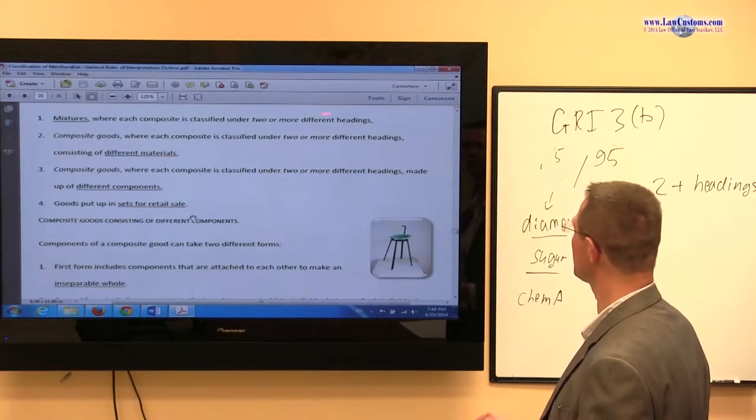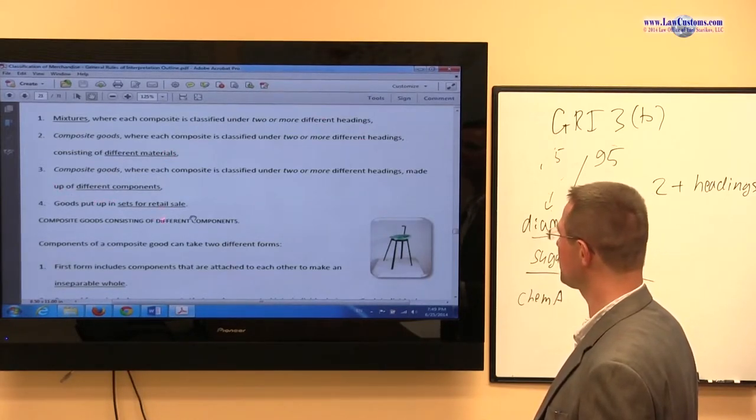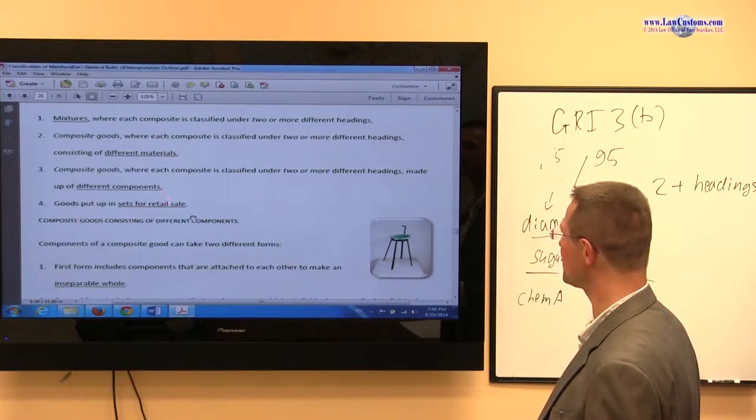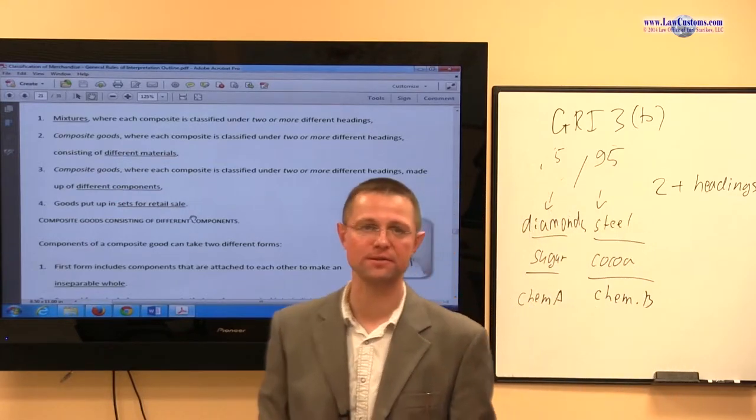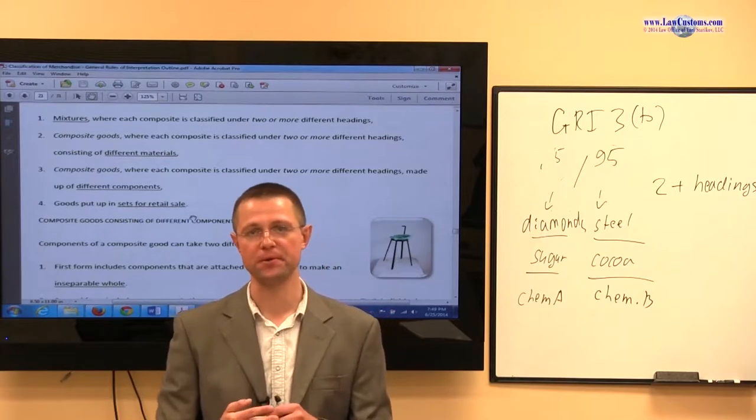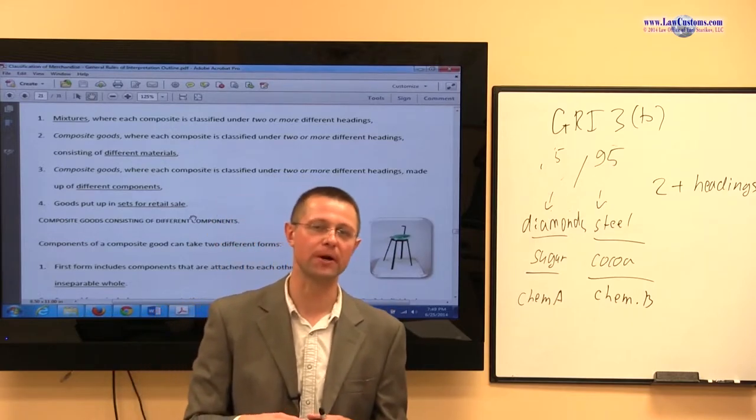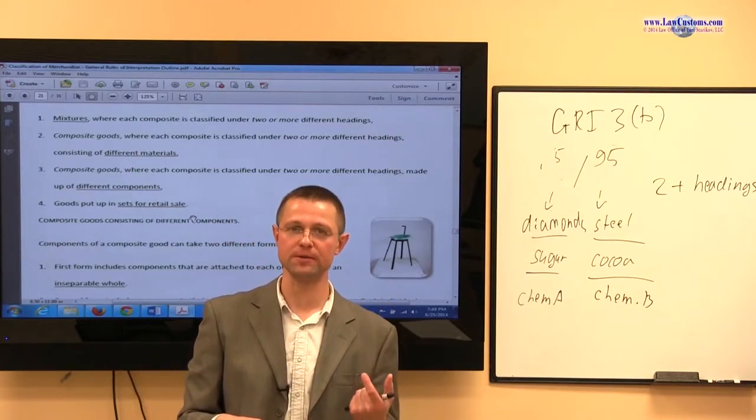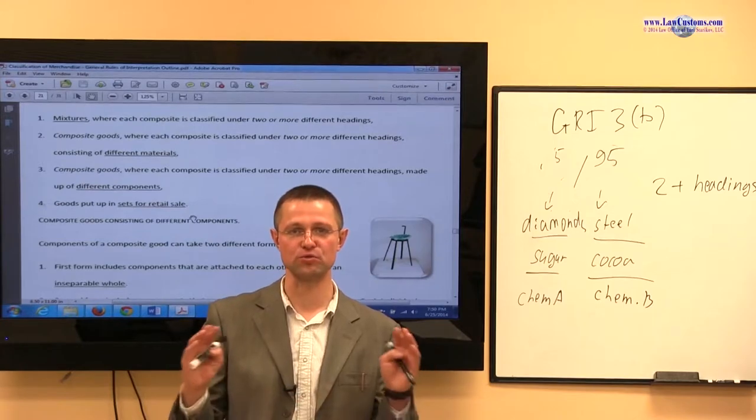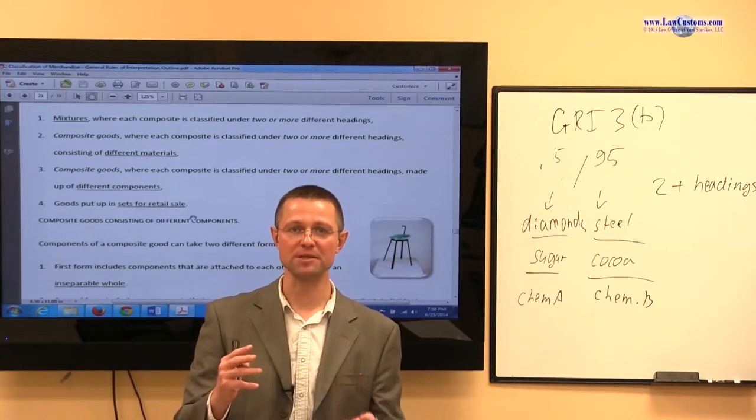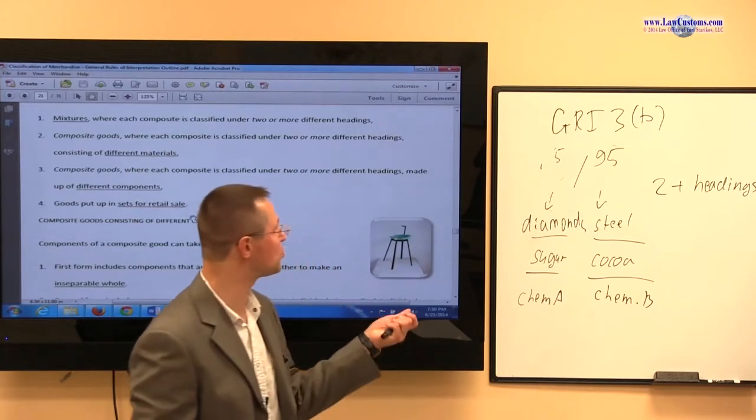Composite good, you have to have two or more different materials which are in different headings, different components. And for goods put up in retail sale, the sets that are put up in retail sale, we already saw sets, the notion of sets in GRI-3A. Same type of requirements apply to GRI-3B. It must be for retail sale. It must be put together to reach the end consumer. And each component within a set must be classifiable in two or more headings.